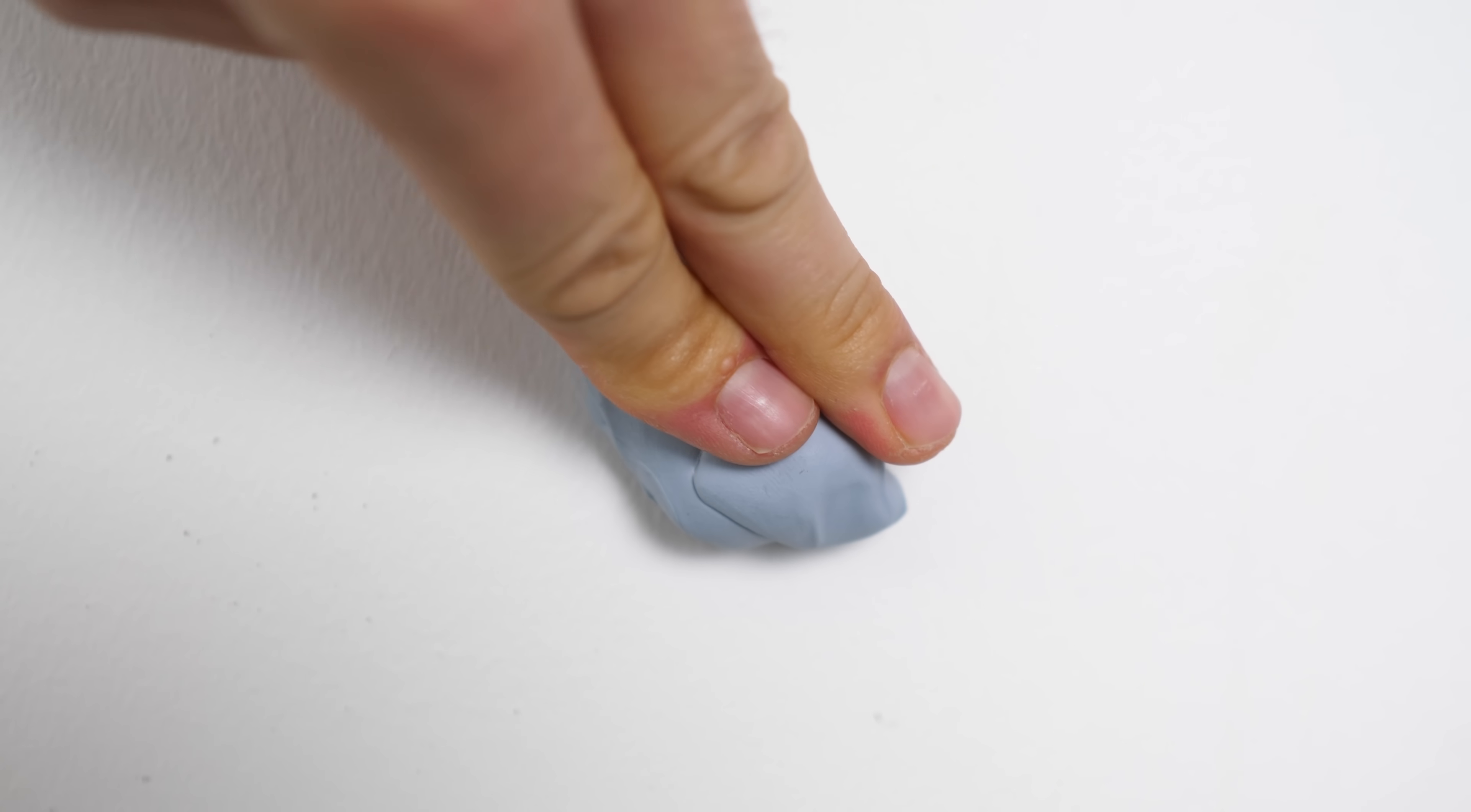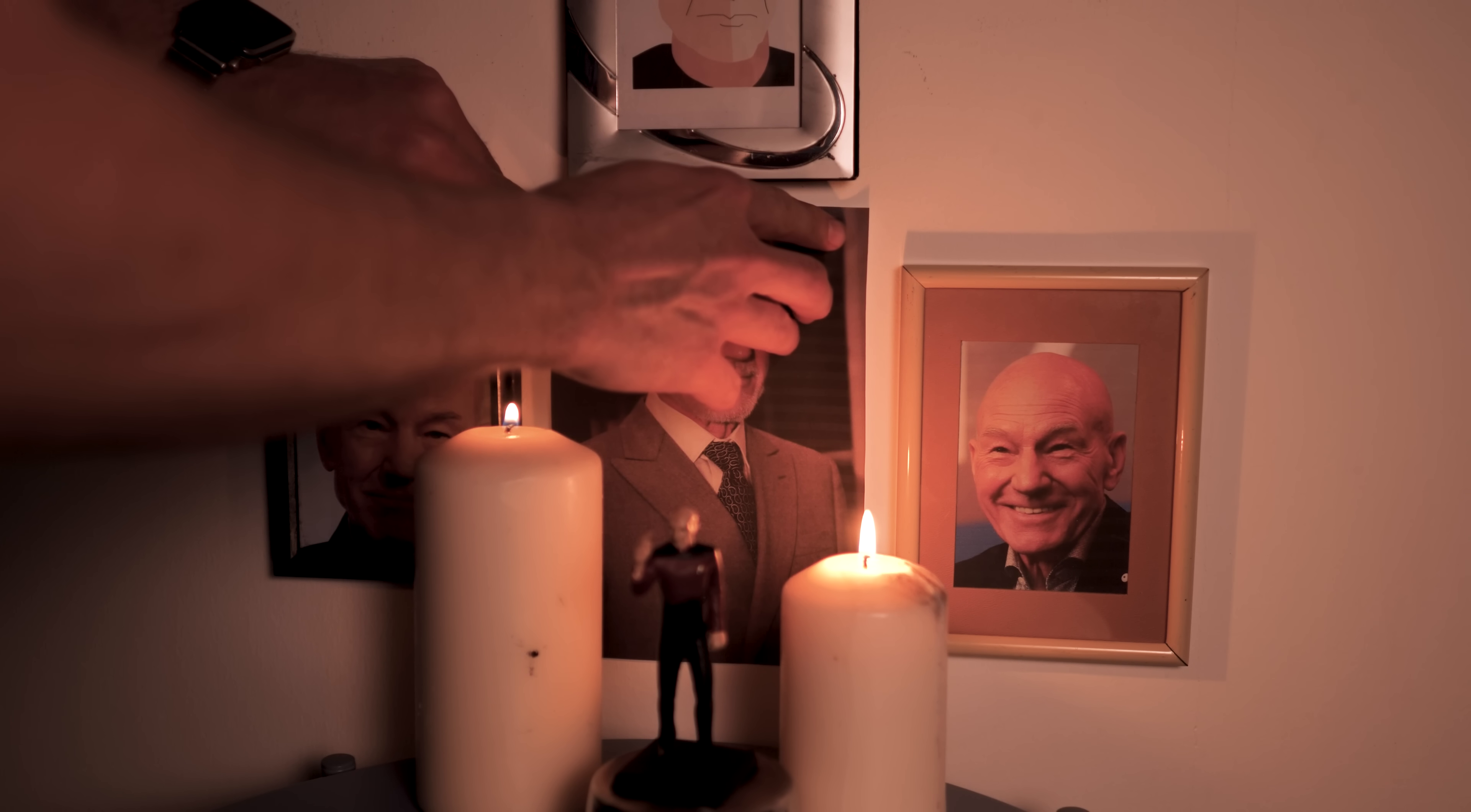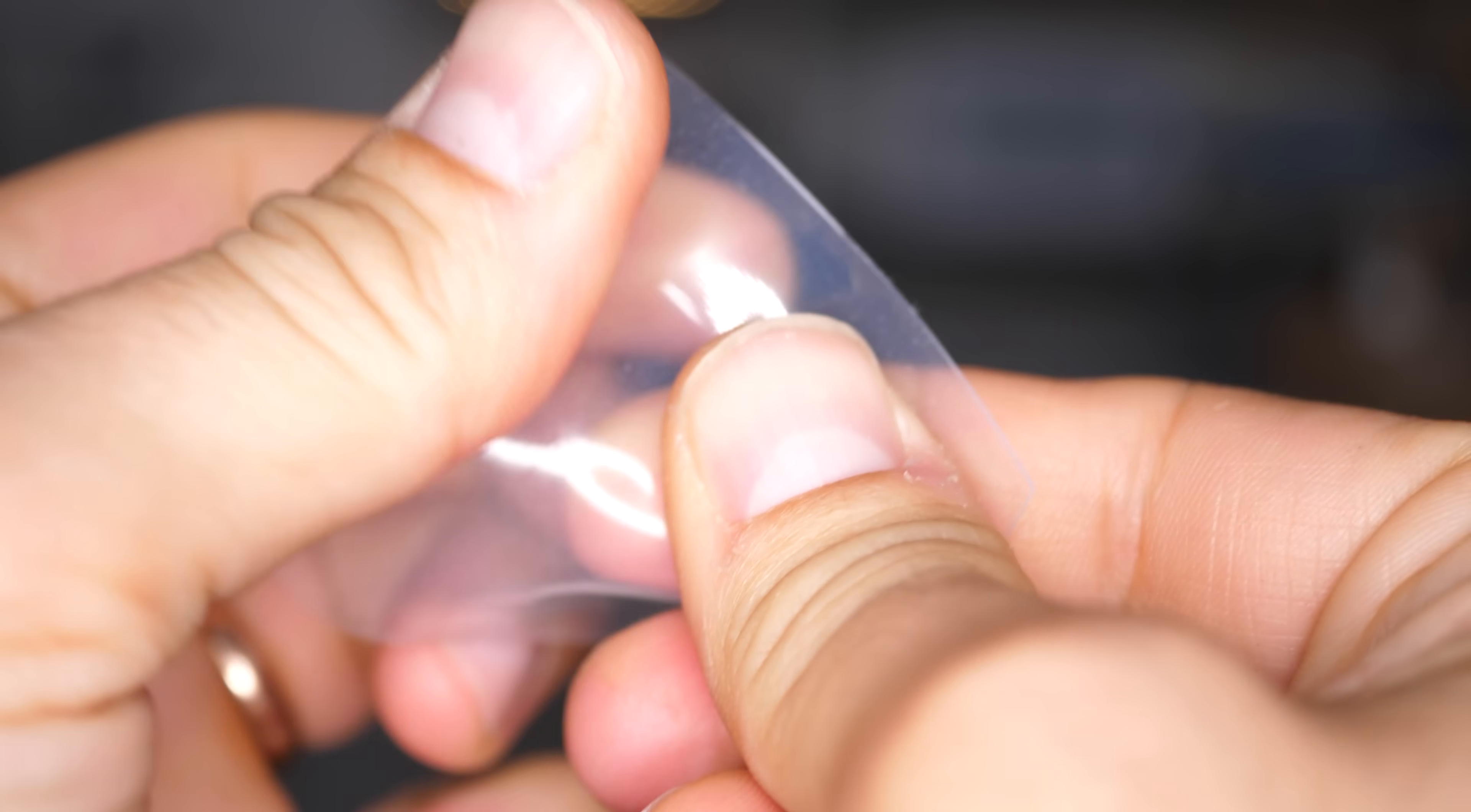The difference between Blu-Tac and this self-healing polymer is that Blu-Tac is sticky. It sticks to my hand, it sticks to a wall, it sticks to the back of this picture of Patrick Stewart. So it's not surprising that Blu-Tac sticks to itself but this polymer isn't sticky.